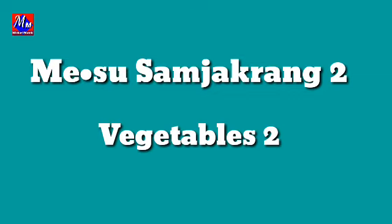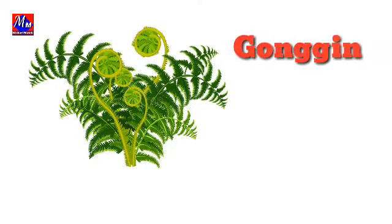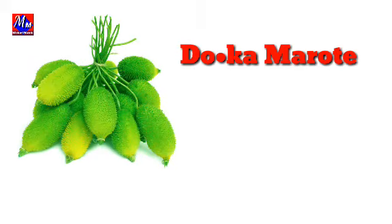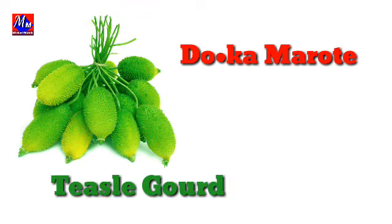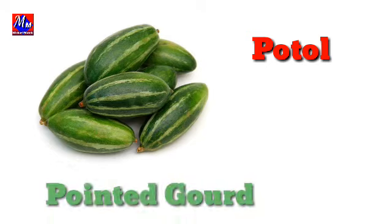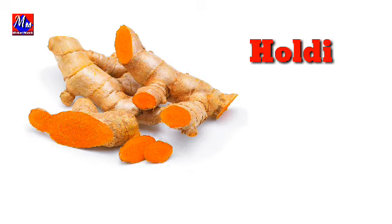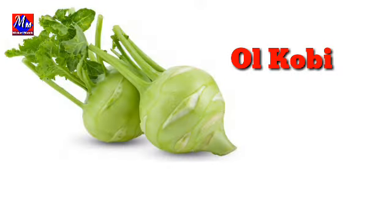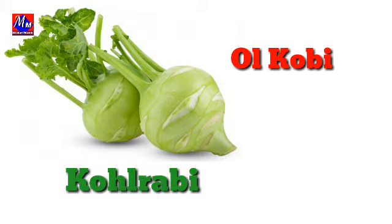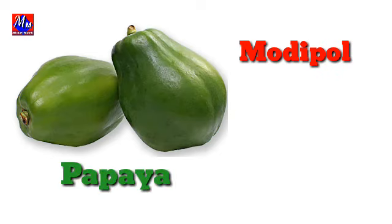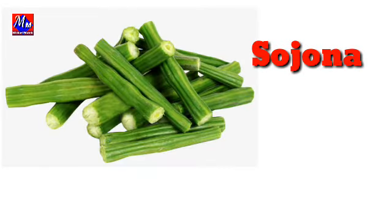Vegetables Part 2. Garochi, algobi, English: cauliflower. Garochi, korabi, English: kohlrabi. Garochi, modifol, English: papaya. Garochi, sojona, English: drumstick.